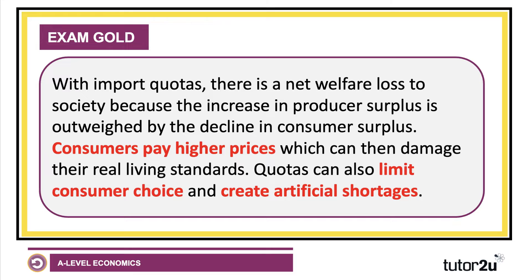So with import quotas there will be a welfare loss because the increase in producer surplus is outweighed by the decline in consumer surplus. We're making domestic producers better off, but domestic consumers are even worse off — so that's a fall in economic welfare. Consumers pay higher prices than with free trade, which depresses real incomes. A quota can also limit choice and create artificial shortages, which — similar to maximum prices — can lead to shadow market activities as people scramble for the limited volume of imports.